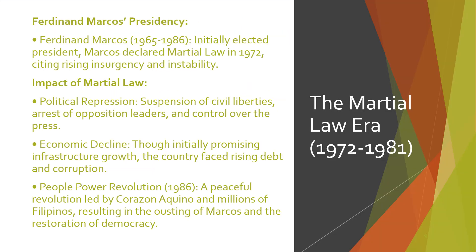Next, we have the Martial Law era under Ferdinand Marcos, who served as president from 1965 to 1986. Initially, Marcos was elected democratically, but in 1972 he declared Martial Law, citing rising insurgency and instability. Martial Law brought significant changes: political repression, suspension of civil liberties, and censorship. Many opposition leaders were arrested, and the press was heavily controlled.